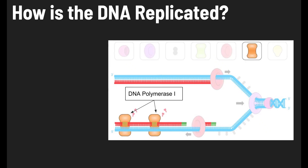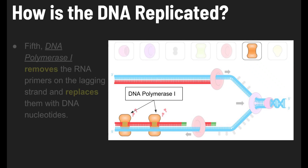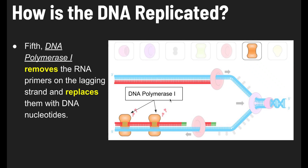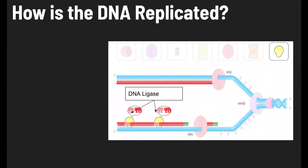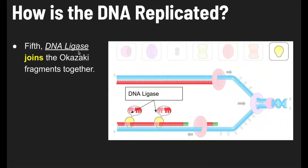In the fifth and final step, two enzymes are at work. DNA polymerase I removes the RNA primers on the lagging strand and replaces them with DNA nucleotides. Then DNA ligase joins together the Okazaki fragments — ligase is like glue that comes in at the end and glues the fragments together so you have two continuous strands.